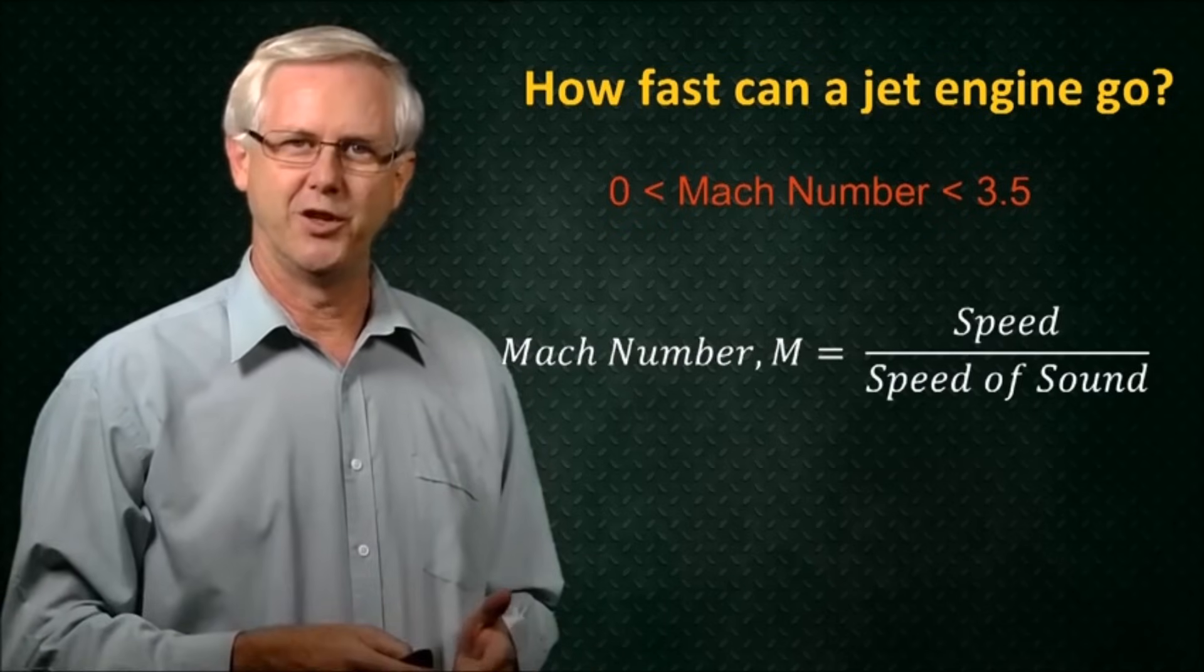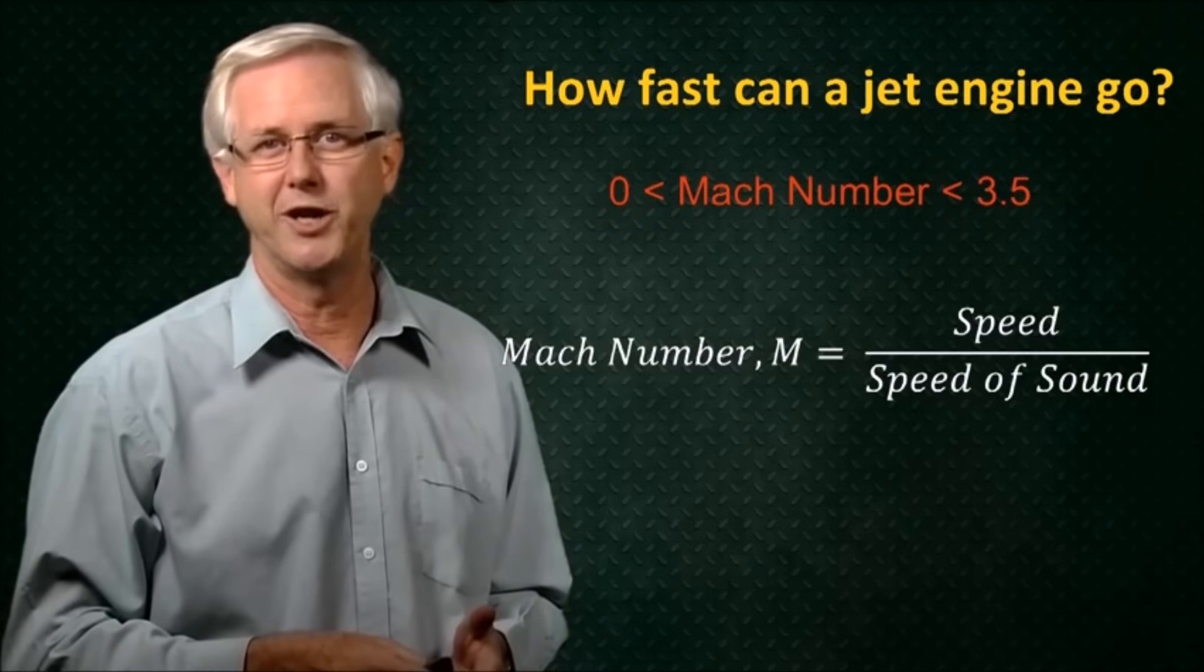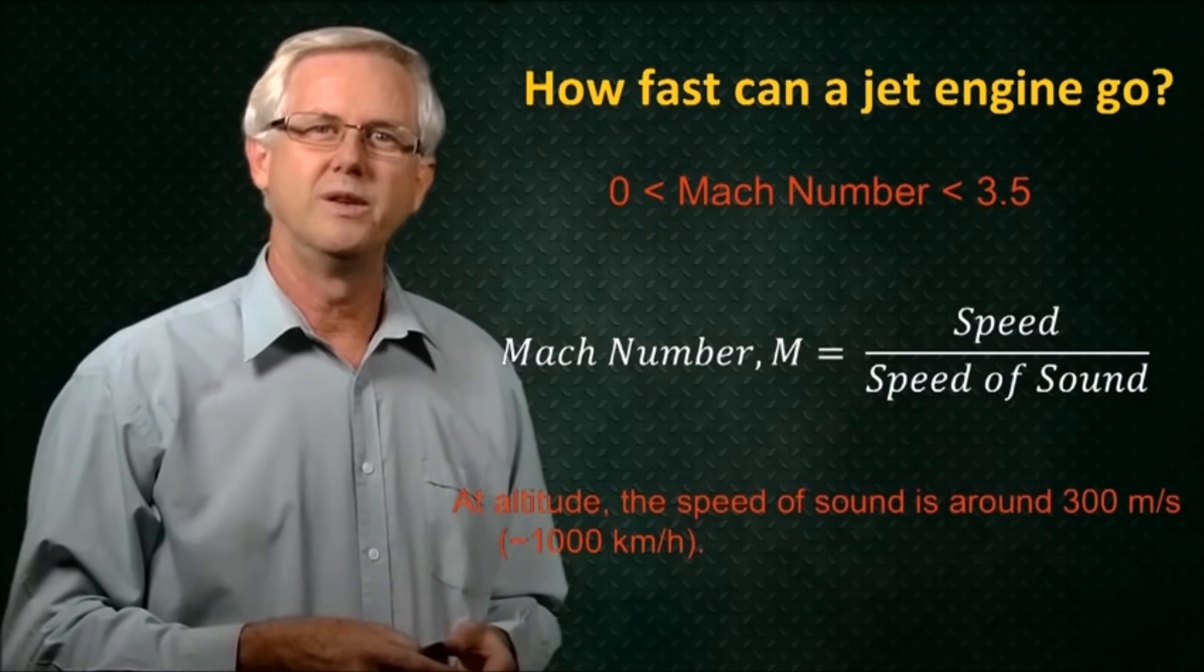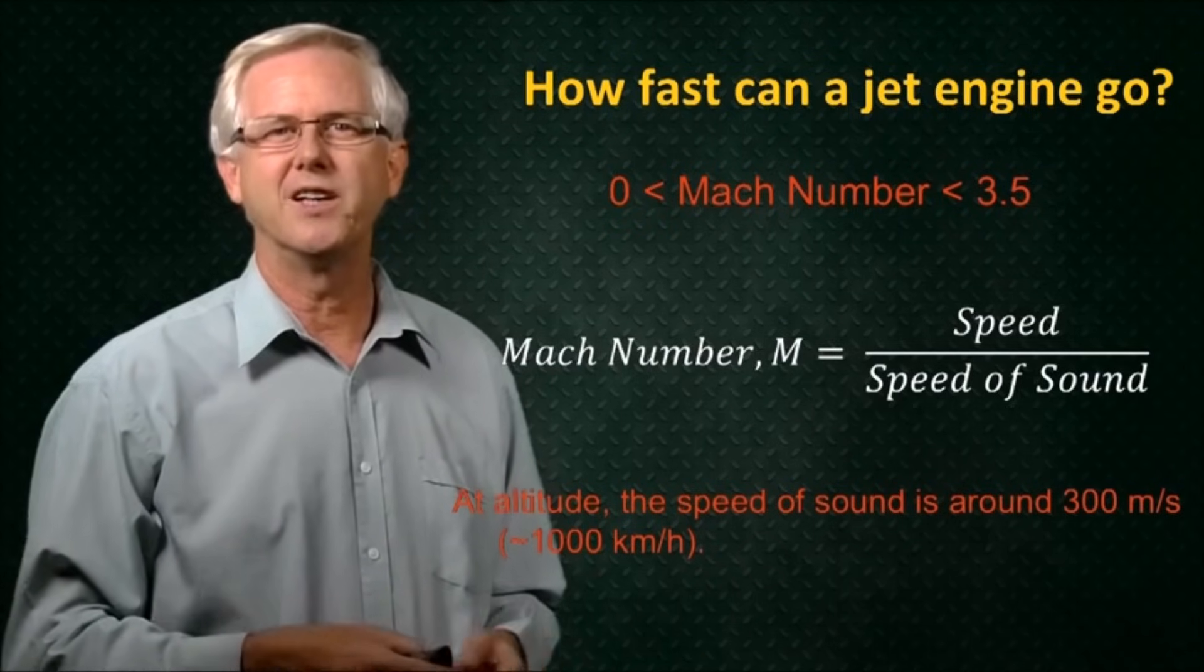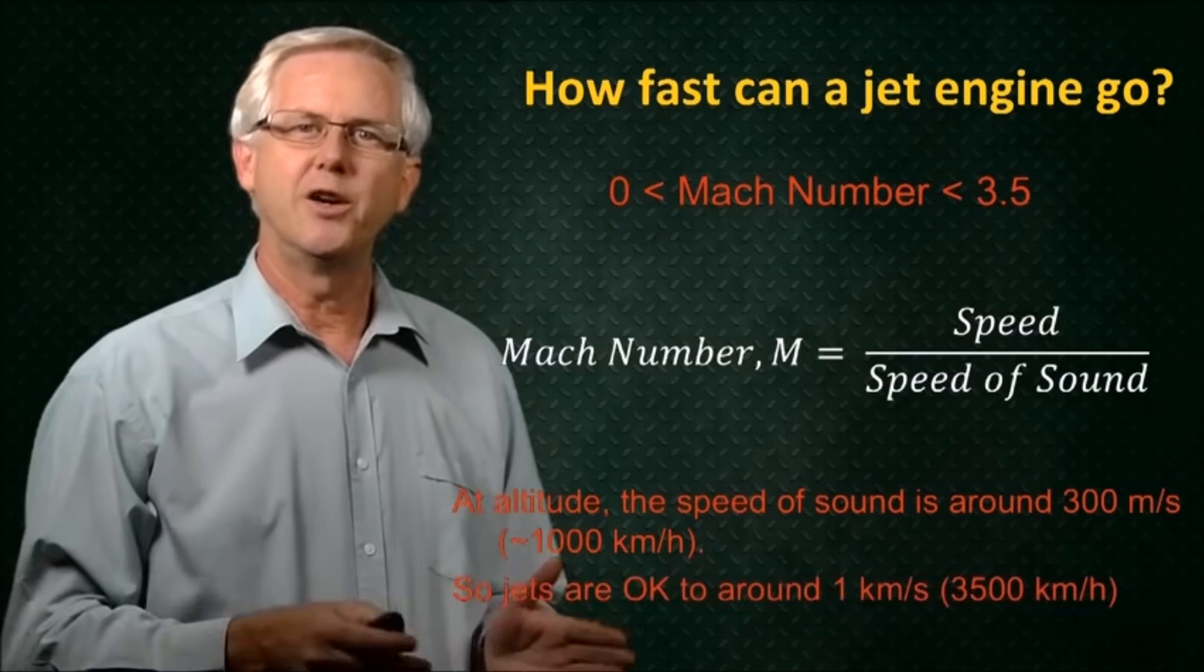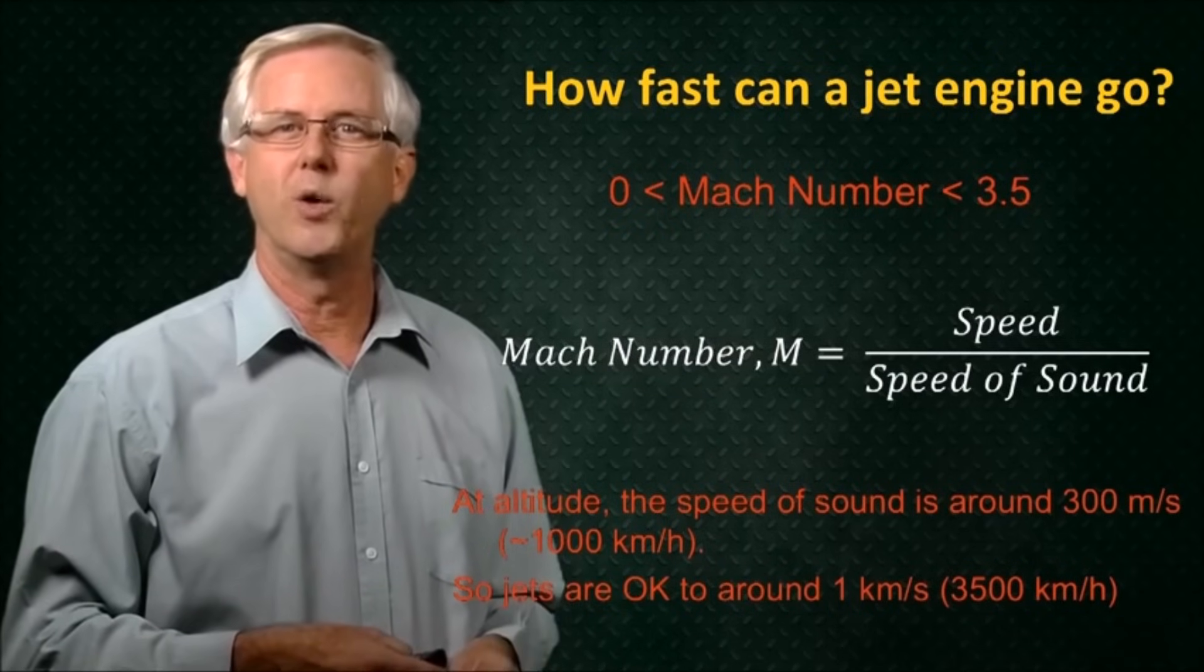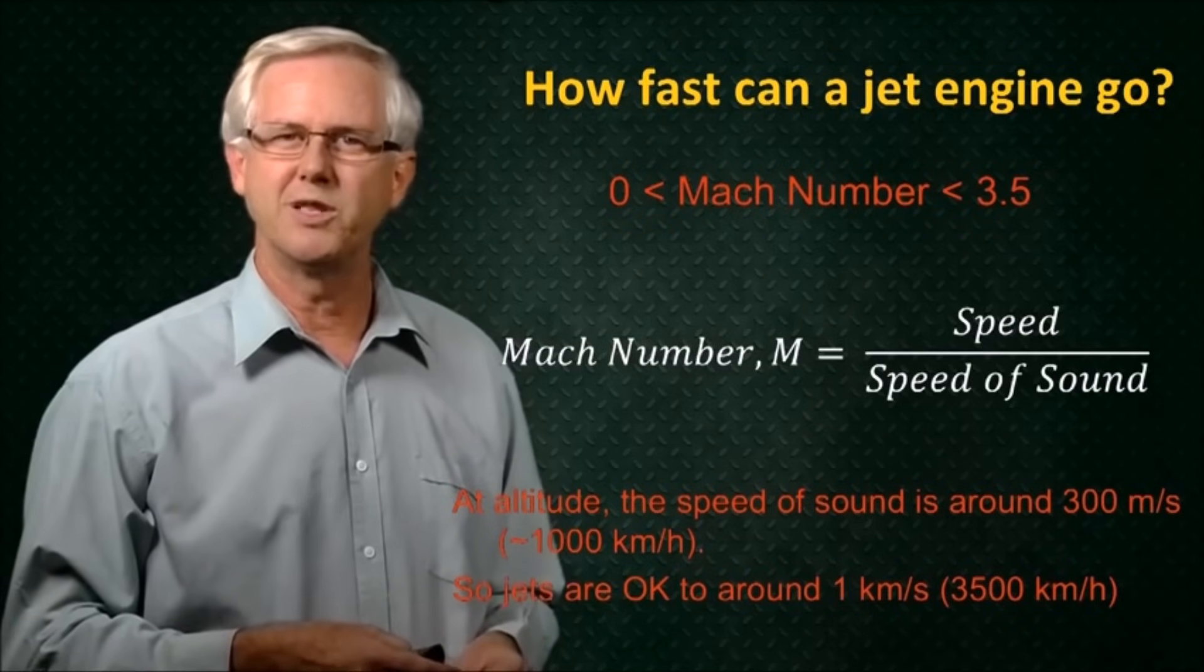Remember from our previous unit that the Mach number indicates how many times the speed of sound an object is moving. So if we're flying at altitude where the air temperature is lower than at ground level, then the speed of sound is around 300 meters per second, around that 1000 km per hour mark. Therefore, jets are good for getting us up to speeds of around 1000 meters per second, that is 1 km per second or around 3500 km per hour, but not for getting us up to hypersonic speeds.